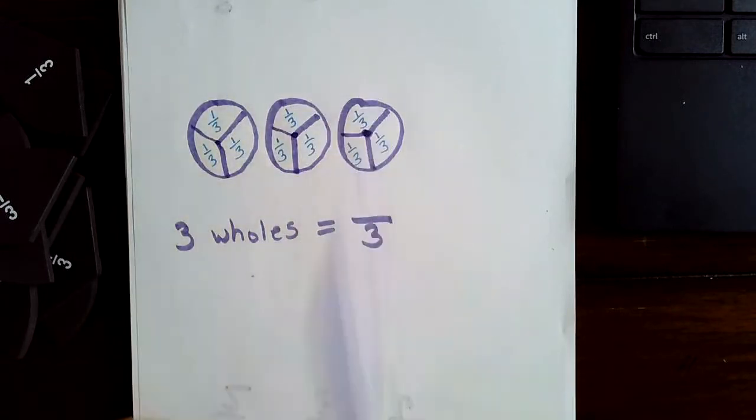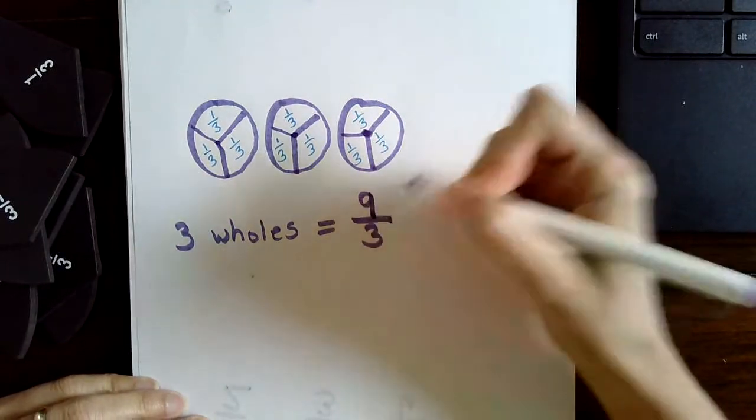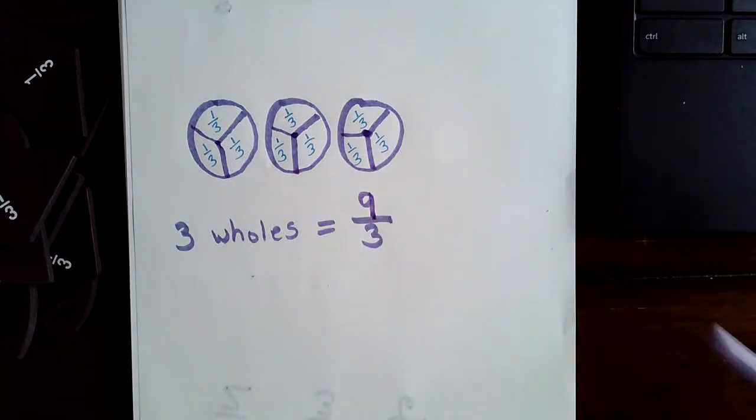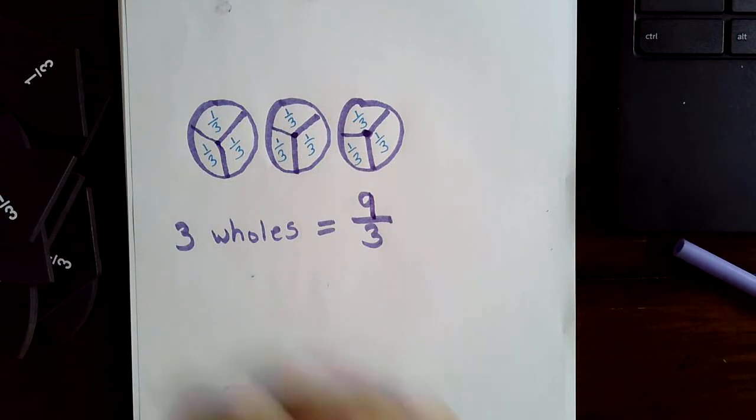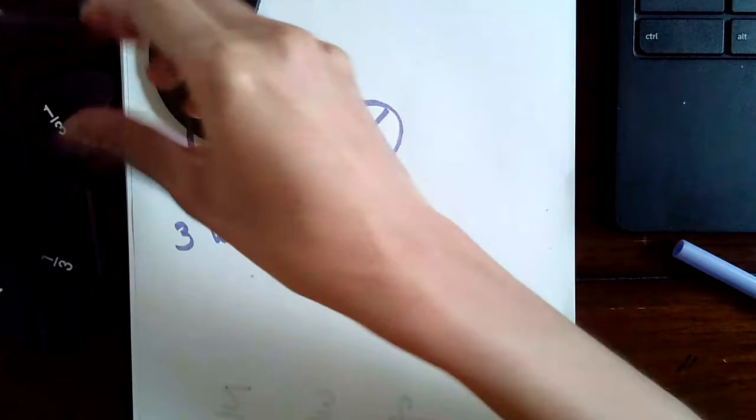So three, six, nine. We can use our counting by three skills. So nine thirds is the same thing as three wholes. And now I'm going to show you that using our foam fractions.